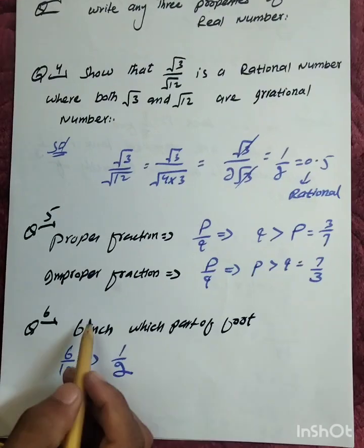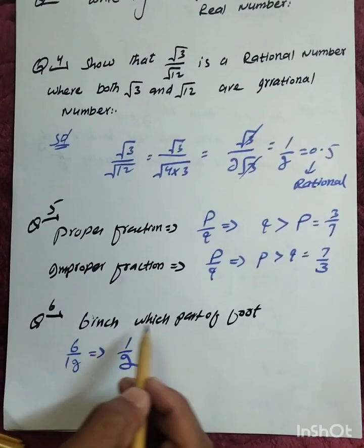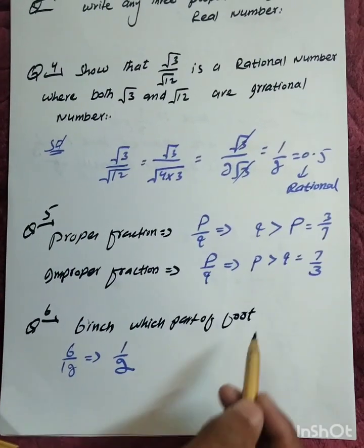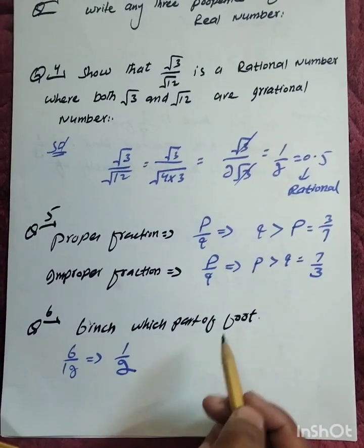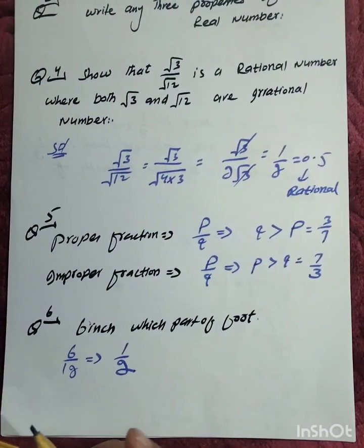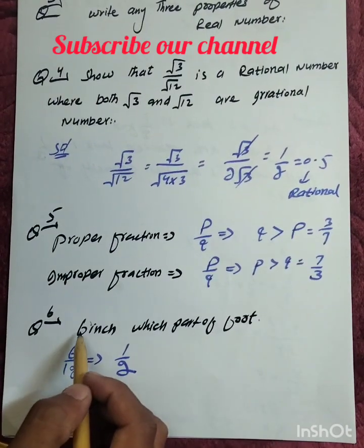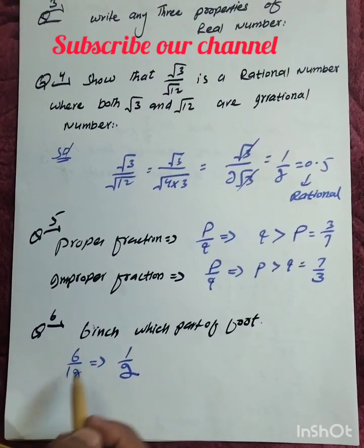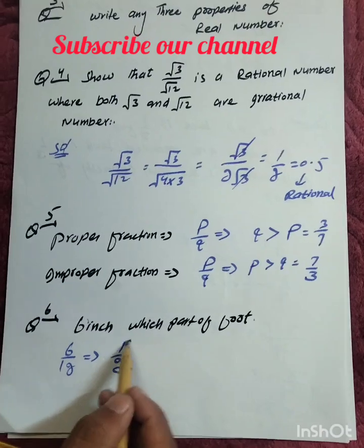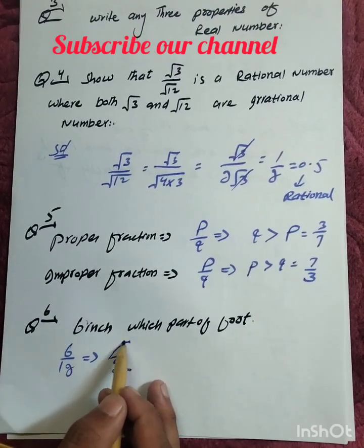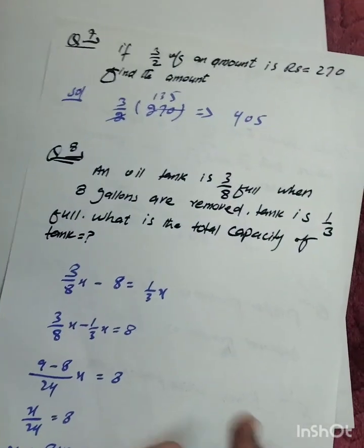Question number 6 asks which part of a foot is 6 inches. One foot equals 12 inches total, so 6 inches is 6 divided by 12, which simplifies to 1 divided by 2. Therefore, 6 inches is one-half part of a foot.